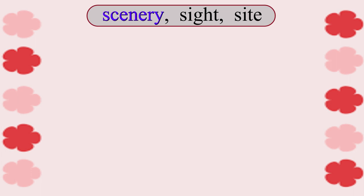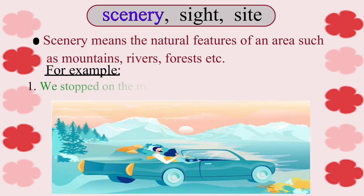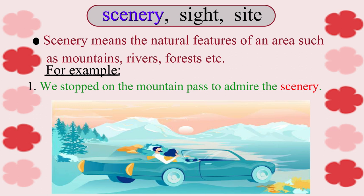Let us see this set of words: 'scenery', and the other two words S-I-G-H-T 'sight' and S-I-T-E also pronounced as 'sight'. Scenery means the natural features of an area such as mountains, rivers, forests. For example: 'We stopped on the mountain pass to admire the scenery.'